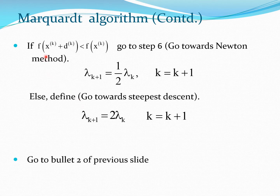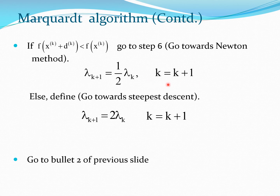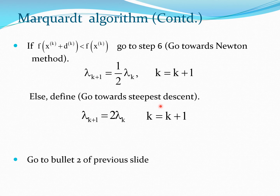The first possibility is that your function value at the next point x_k + d_k has decreased from your current point. In that case, you go toward the Newton method: lambda_{k+1} = (1/2) * lambda_k. You reduce the lambda value and update k to k+1. The second situation is that your search direction did not reduce the objective function value, in which case you go toward the steepest descent method: lambda_{k+1} = 2 * lambda_k, and update k to k+1.